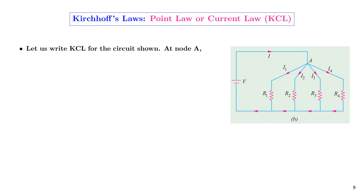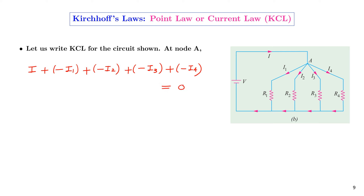Let us write KCL for the circuit shown. At node A, the current approaching the junction is I, so its sign is positive, and the currents that leave the junction are I1, I2, I3, and I4. The algebraic sum of all the currents meeting node A is zero, therefore I equals I1 plus I2 plus I3 plus I4.